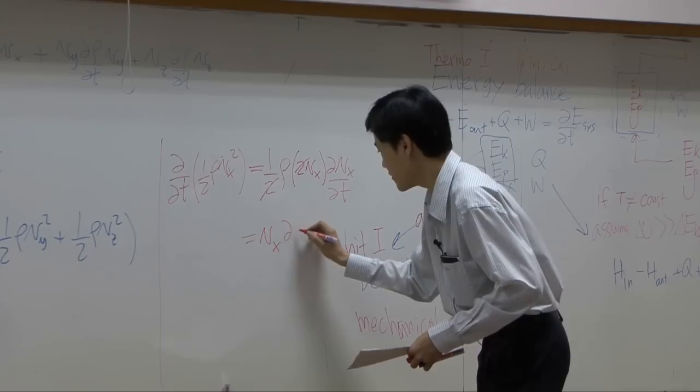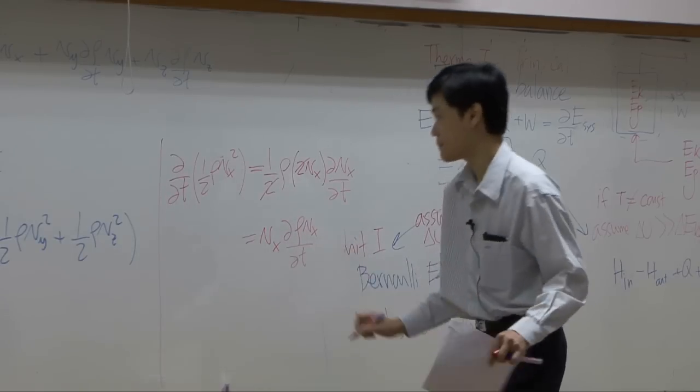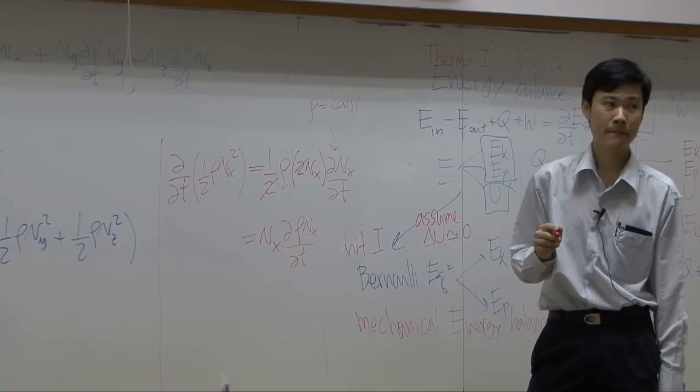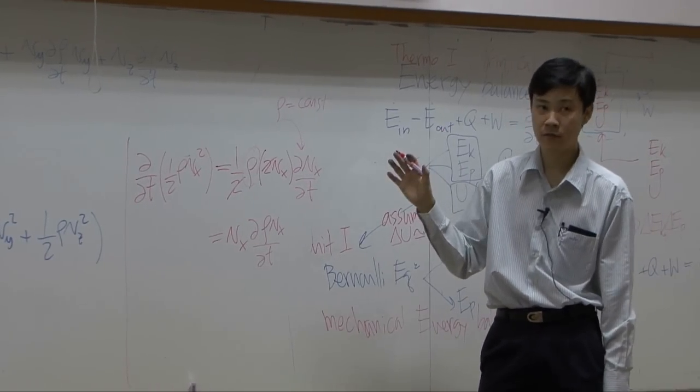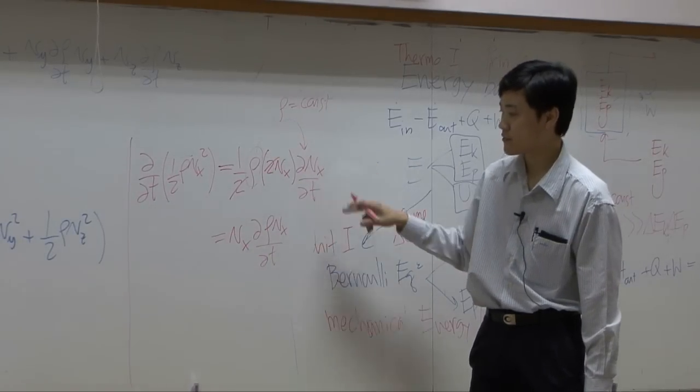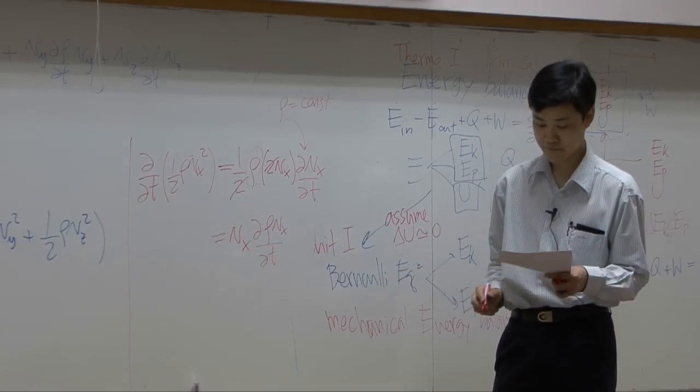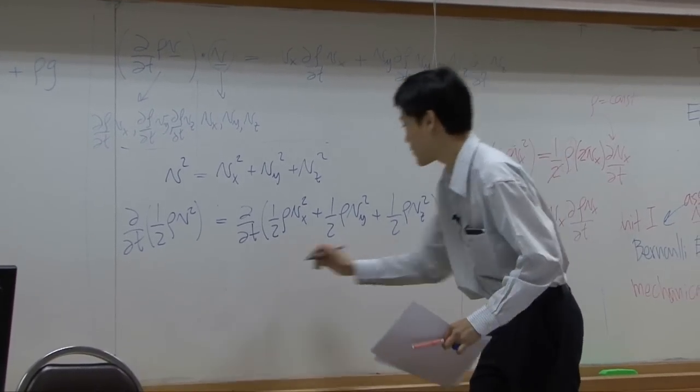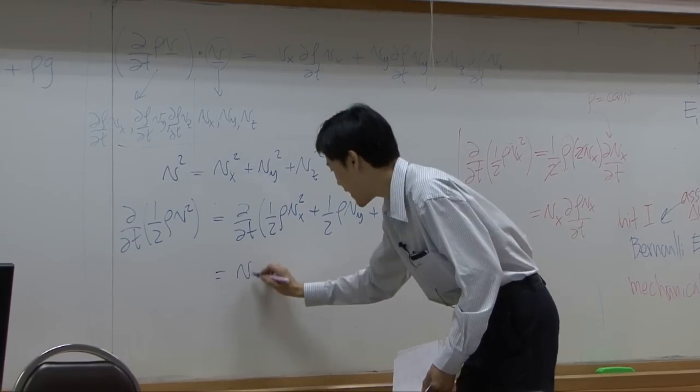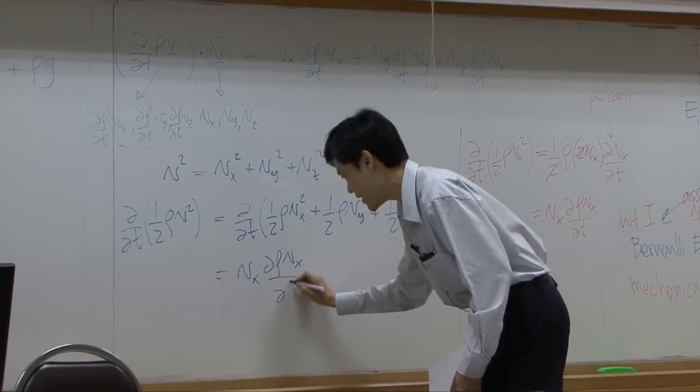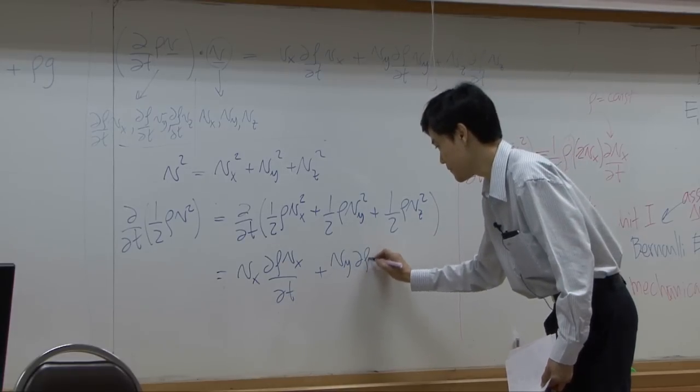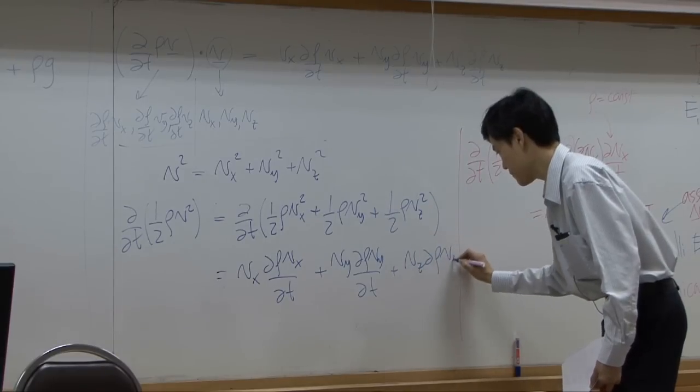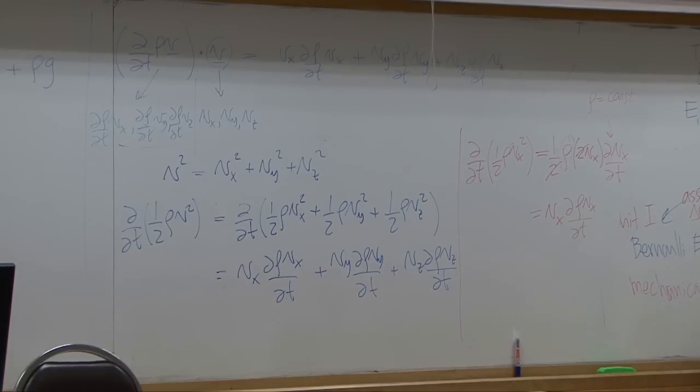You have vx d rho vx by dt. I can take rho in here if you assume rho is equal to constant. Just simple, a simple case first. If rho is constant you can take rho out. You get vx d rho vx by dt. So this term, the first term would be vx d rho vx by dt. Then you have vy and vz.